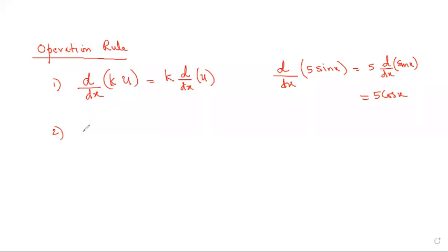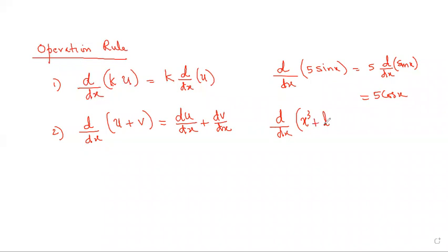Second rule — this is what I taught you in 11th standard. If two functions are connected by a plus sign, then it is the derivative of the first one plus the derivative of the second. For example, derivative of x³ + log x: it's derivative of x³ plus derivative of log x. So derivative of x³ is 3x², and derivative of log x is 1/x.